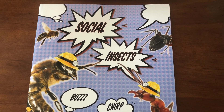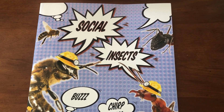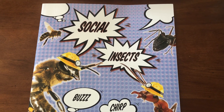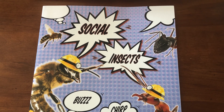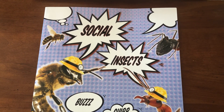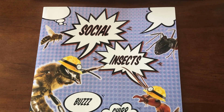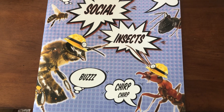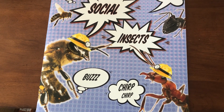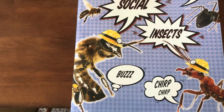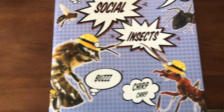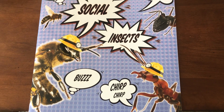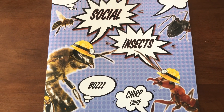Hello there, Kindergarten. It's Mrs. Herleman back again, going to teach you some more about insects. This week we're going to learn about social insects, and we're going to learn what insects belong to this group — what insects are considered social. If you look at the cover, it might give you a hint. I see a bumblebee and I see an ant, so that might be a clue of what two insects belong to the social insect group.